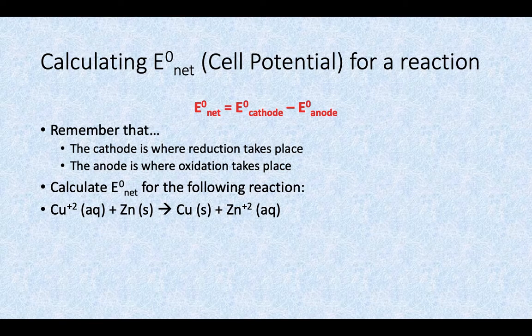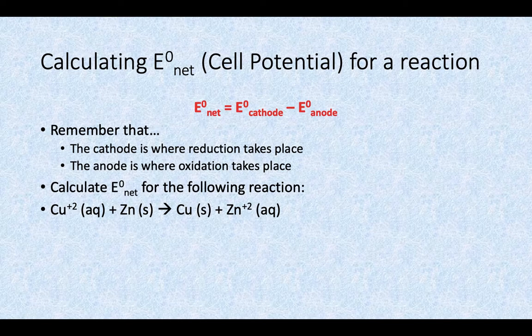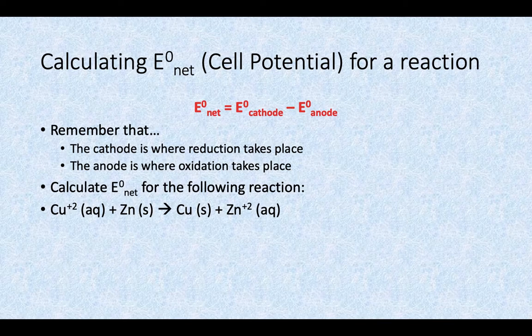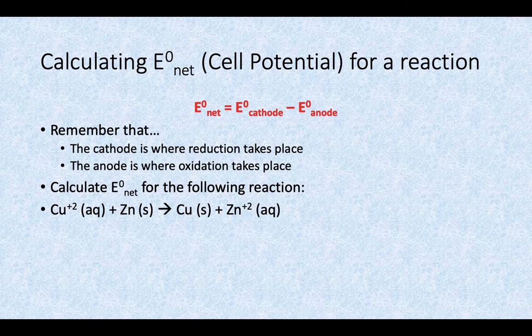So if we look at that copper and zinc reaction where we decided on the previous slide that the net reaction was going to take place between an aqueous solution of copper and elemental neutral zinc. In that reaction, the copper is the one that's gaining the electrons, so the copper is the cathode.